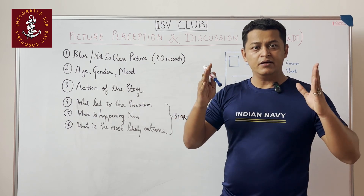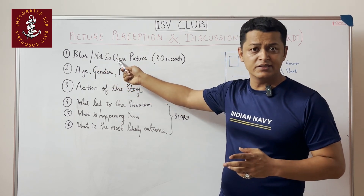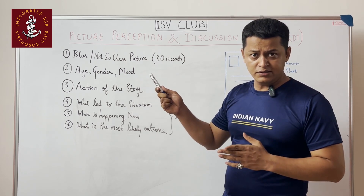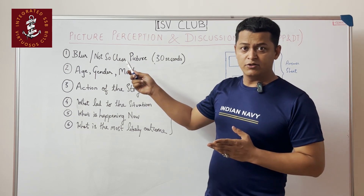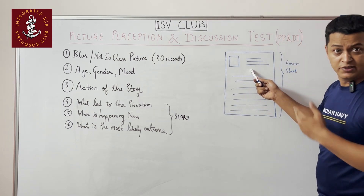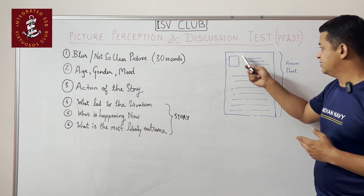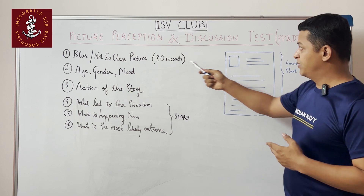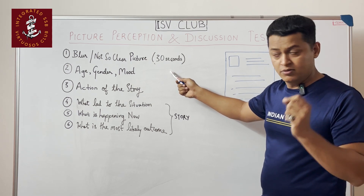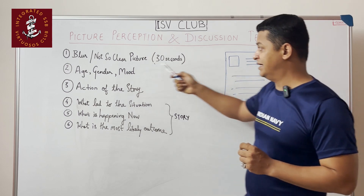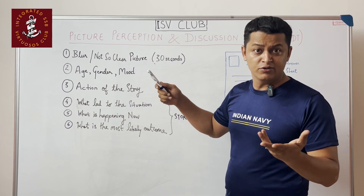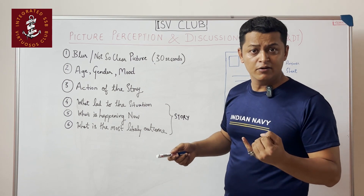There on the screen, you will be shown a picture. The picture is generally blur or not so clear, but these days absolutely crystal clear pictures are also shown. What is important is: you are shown the picture for 30 seconds and you are also given an answer sheet just before the test starts. This answer sheet has a box in the top left corner where you mark the characters you saw in the picture using dots.